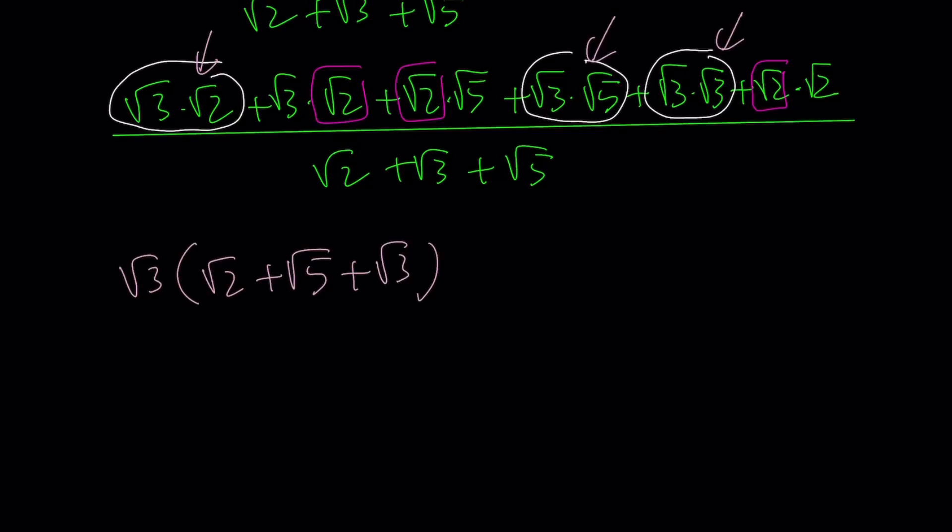And everything else has root 2 as a common factor. And this gives us root 3 plus root 5 plus root 2. And then the whole thing is going to be divided by root 2 plus root 3 plus root 5.